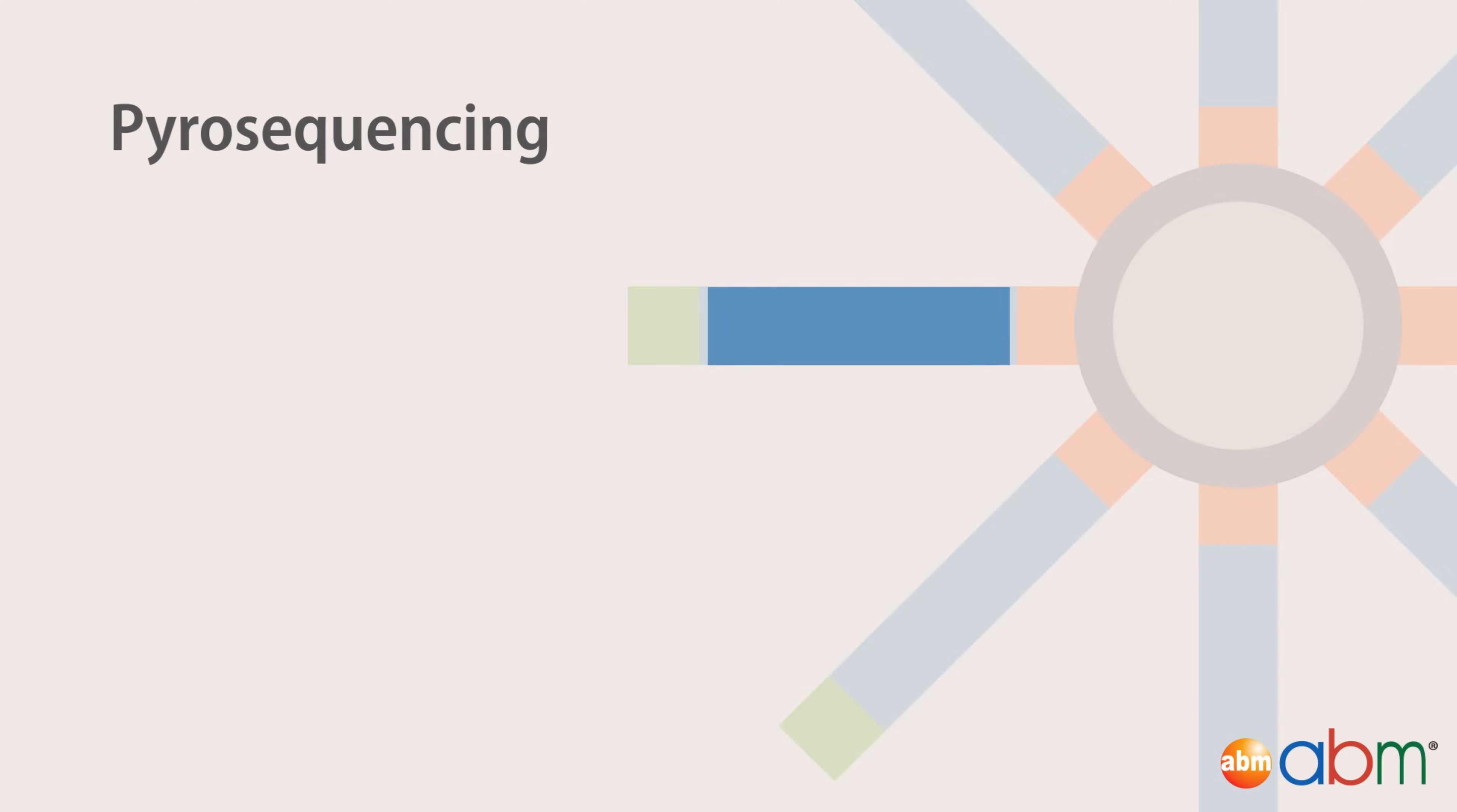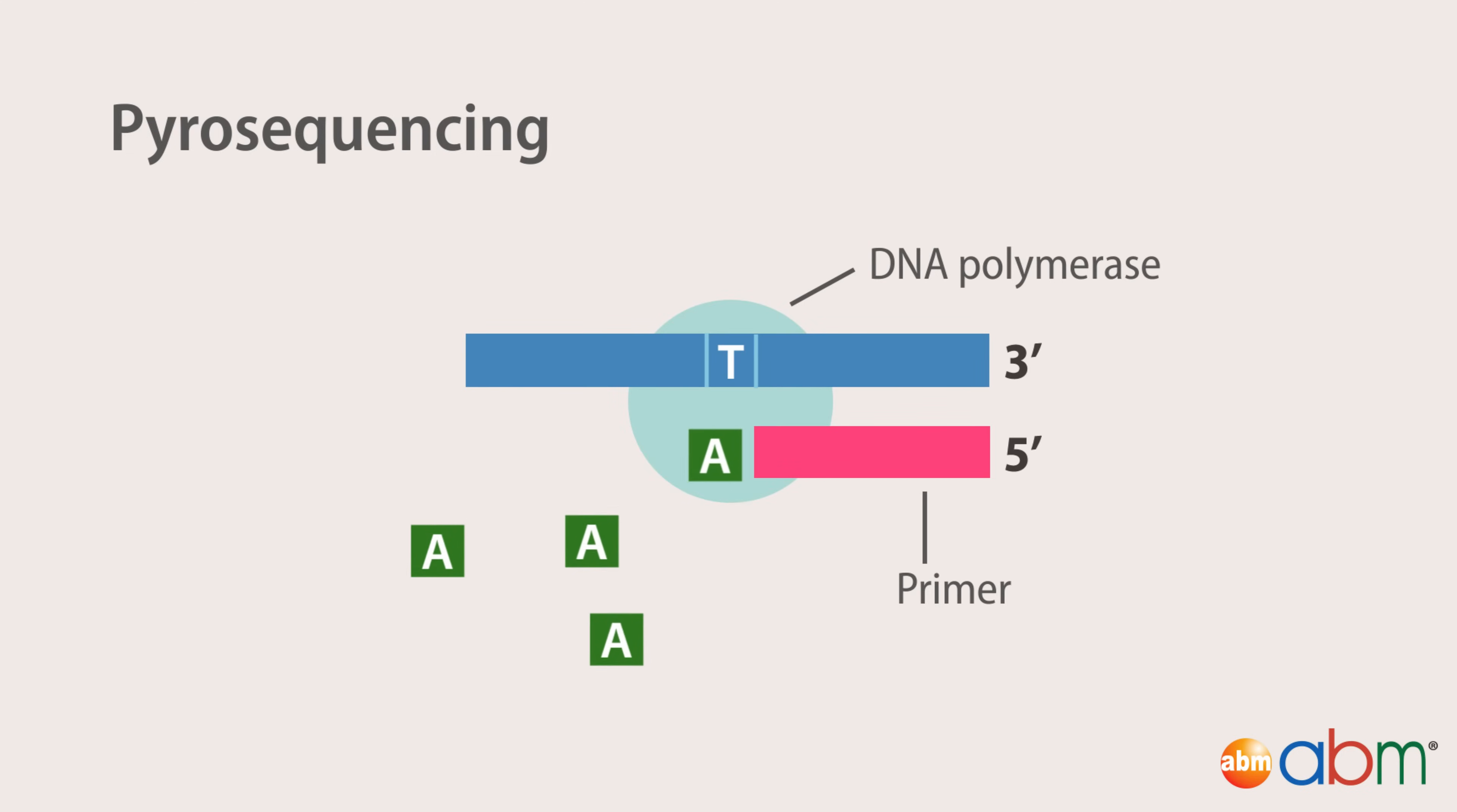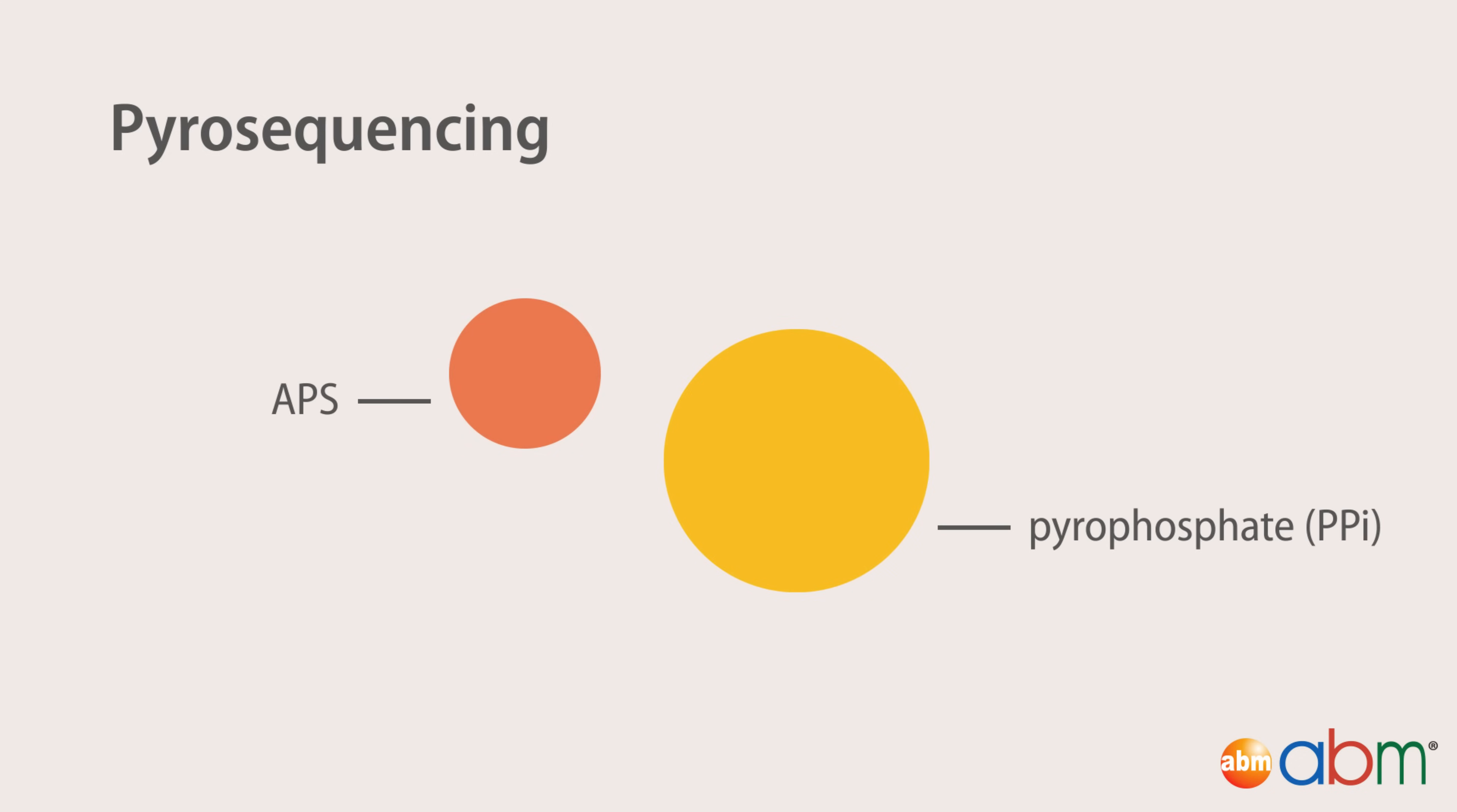In pyrosequencing, the sequencing reaction is monitored through the release of a pyrophosphate during each nucleotide incorporation. The released pyrophosphate is used in a series of chemical reactions resulting in the generation of light. Light emission is detected by a camera which records the appropriate sequence of the cluster. The sequencing proceeds by incubating one base at a time, measuring the light emission, if any, degrading the unincorporated bases, and then the addition of another base. This technology is capable of generating large read lengths, much comparable to the read length of Sanger sequencing.